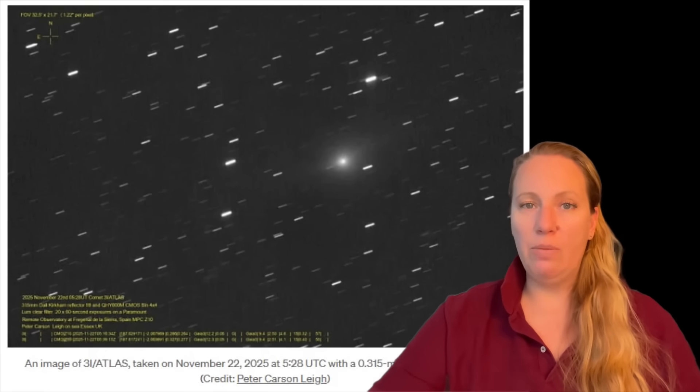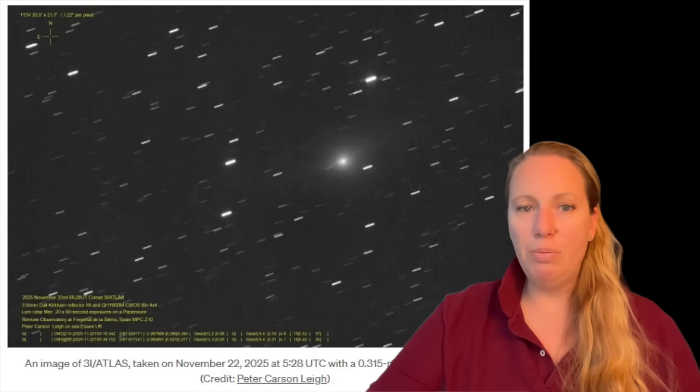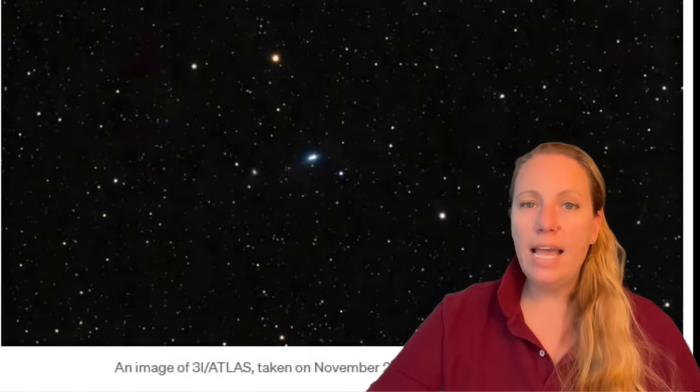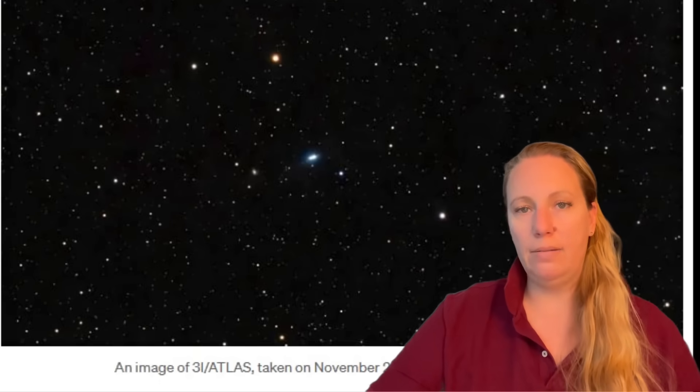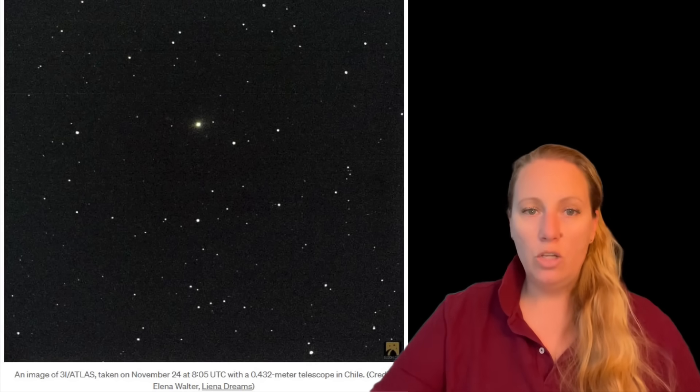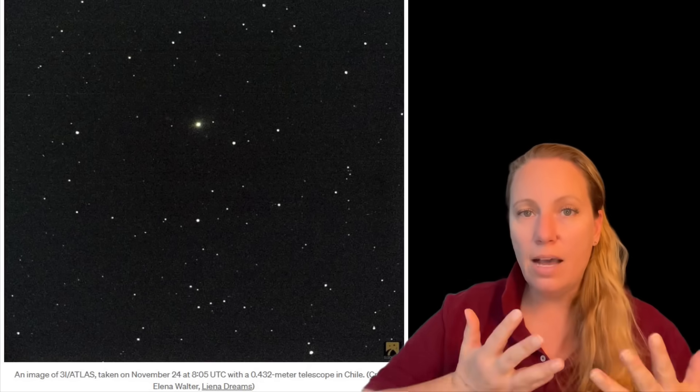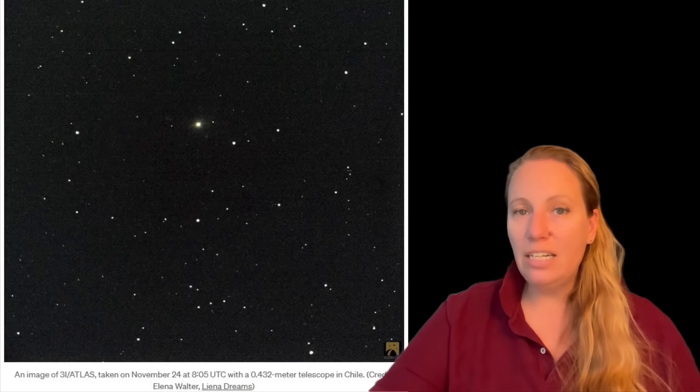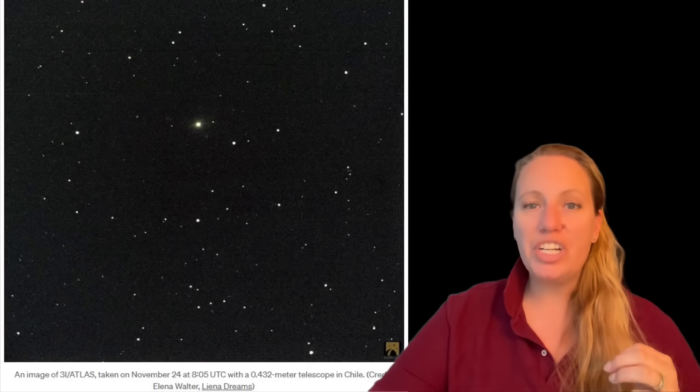Now you might wonder, why does this matter? The anti-tail is a problem for any explanation that wants to tell us that this is a natural comet. Why? Because for the anti-tail to push against the solar wind coming towards it and still reach that huge size, the headlights, it must have a huge momentum.